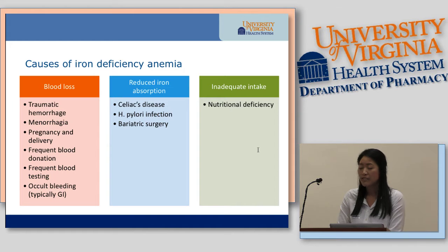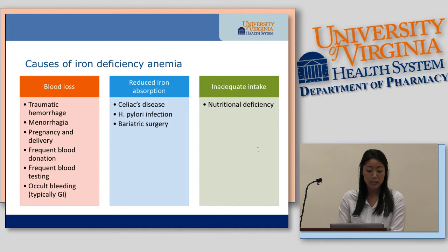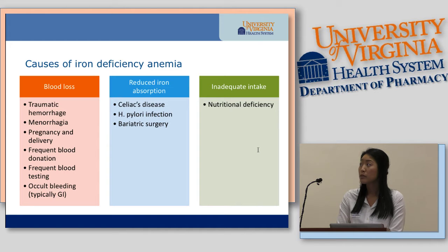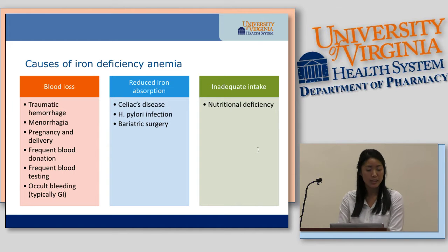Common causes of iron deficiency anemia include blood loss — traumatic hemorrhage, menorrhagia, pregnancy and delivery, frequent blood donation, frequent blood testing, and occult bleeding. There can also be a reduction in iron absorption in patients with celiac disease, H. pylori infection, or bariatric surgery. And there is inadequate intake, which is iron deficiency anemia due to nutritional deficiency.